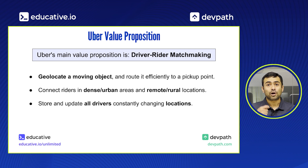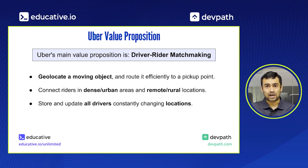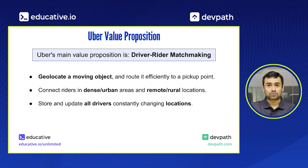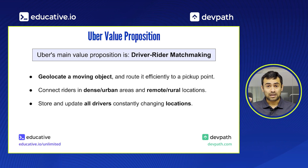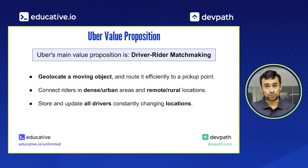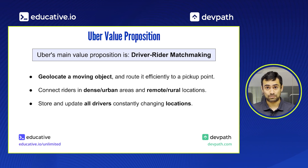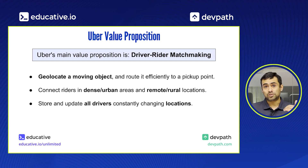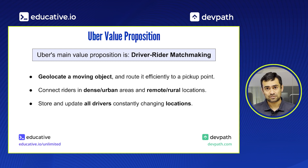Riders are mostly static — maybe fidgeting or walking around a little bit — but they're largely in one place, while drivers are typically moving. So when a rider requests a ride, Uber has to quickly come up with a list of candidate drivers that are nearby. How do you do that efficiently? How do you figure out where the driver is, where the rider is, whether those coordinates are close enough, and who are the top three or four closest drivers? Then you send them the request, and as soon as they accept, the match has been made. You then use a trip manager to make sure the trip is successful.